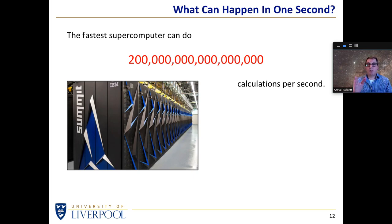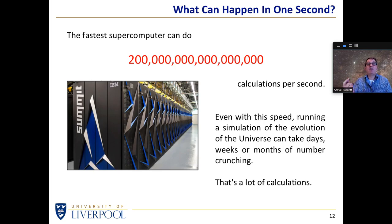Even if we had a supercomputer capable of two hundred thousand million million calculations a second, bear in mind that if we want to do a complex simulation, for instance, of how the early universe evolves and how galaxies form, that could take days or weeks or months of number crunching. That's just a sobering reminder that the sort of simulations need an enormous number of calculations to actually complete.